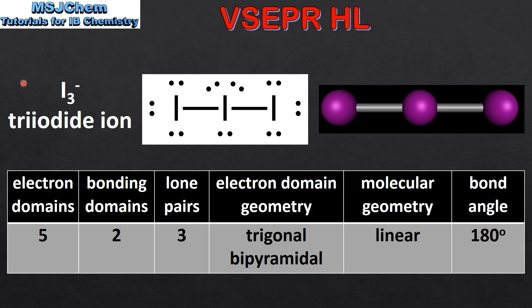In the last example with 5 electron domains we have I3 negative, which is the triiodide ion. The triiodide ion has 2 bonding domains and 3 lone pairs of electrons around the central atom. The electron domain geometry is trigonal bipyramidal. The molecular geometry is linear and the bond angle is 180 degrees.